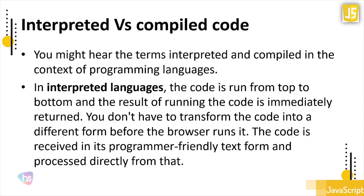In an interpreted language, you don't have to transform the code into a different form — there is no intermediate language, no IL language, no bytecode or binary code required. The code is received in programmer-friendly text form and processed directly by the browser, and the result is displayed right there.